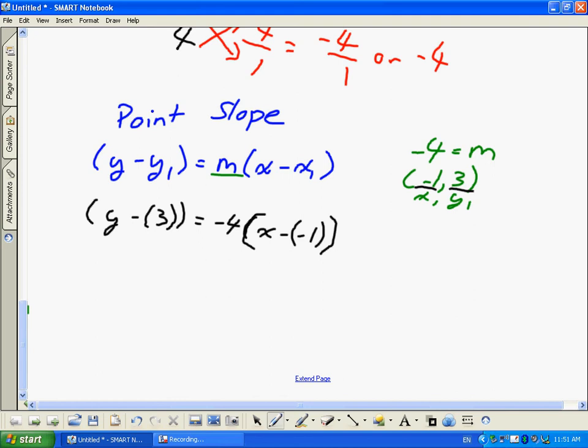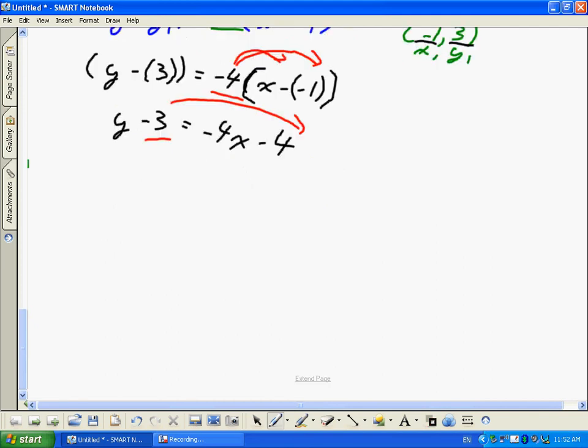I'm going to distribute. Actually, I'll bring this down. We still have Y subtract 3 is equal to, I'm going to distribute this negative 4. So this is going to be negative 4X. And because this is a negative negative, think of it as positive 1. So I distribute negative 4 to positive 1, I end up at negative 4. Now that one's a little confusing. There seems to be three negatives in there. Now that I've distributed, I need to just set this equation equal to Y. So I'm going to move the negative 3 to the other side of the equation.